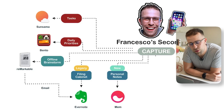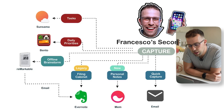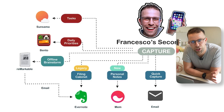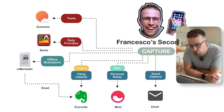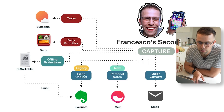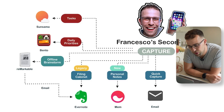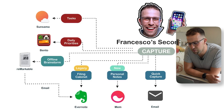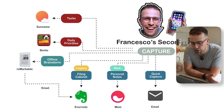Looking at this now, I'd say Sunsama and Mem are the core apps I use. One thing I noticed: for quick capture, I talked about email being my quick capture for tasks, but I actually use Sunsama's quick capture. The problem with Sunsama's quick capture is it doesn't have an offline version, which means you can't capture when offline — but I'm typically online most of the time. I don't really use email for capturing much whatsoever, unless I'm capturing an actual email.